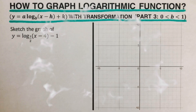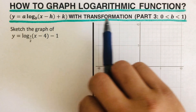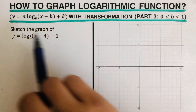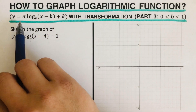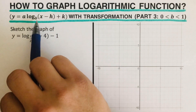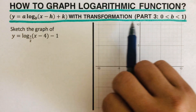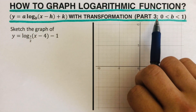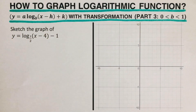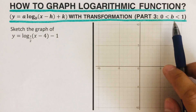Hello everyone. In this video we're going to sketch the graph of a logarithmic function of the form y equals a log of (x minus h) plus k to the base b, with transformations. This is the third part — I will put the link of the first and second part in the description box below.